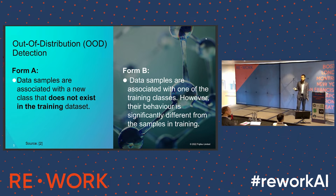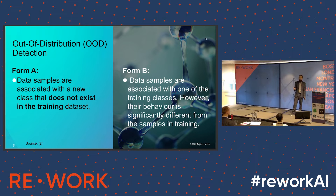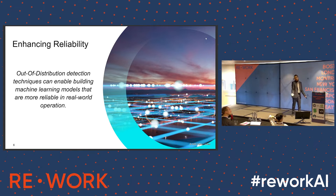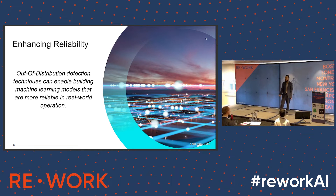Out-of-distribution detection has two forms. The first is when you have a new data sample that represents a new class — something unseen in your data will trigger a new classification problem, and you will detect that something new is happening in your system. The second is when you identify the same class, however the behavior is totally different. The benefit is that your model will be more reliable, and that is something you were looking for when positioning your AI system.